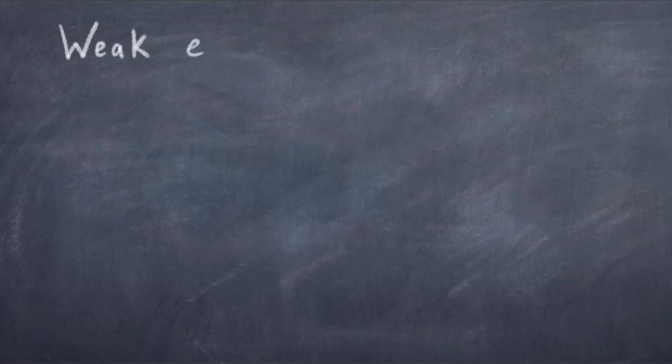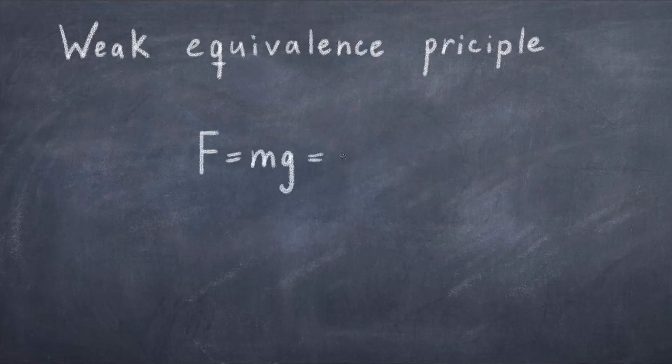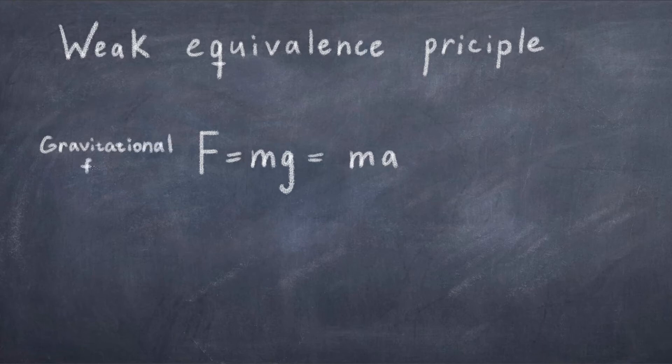If we consider the gravitational force acting on an object, we can write it as the force F equal to mg, where g is the acceleration due to gravity. Now in this case, M is the gravitational mass, which in principle does not have to be the same as the inertial mass from Newton's second law.